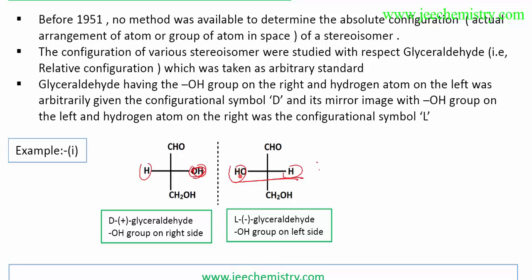If any compound does not have an OH group and only H is available, then we have to consider H. If H is on the left side, then that will be D configuration. If H is on the right side, then that will be L configuration. So we consider these two groups: OH on the right side gives D configuration, and H on the left side gives D configuration.